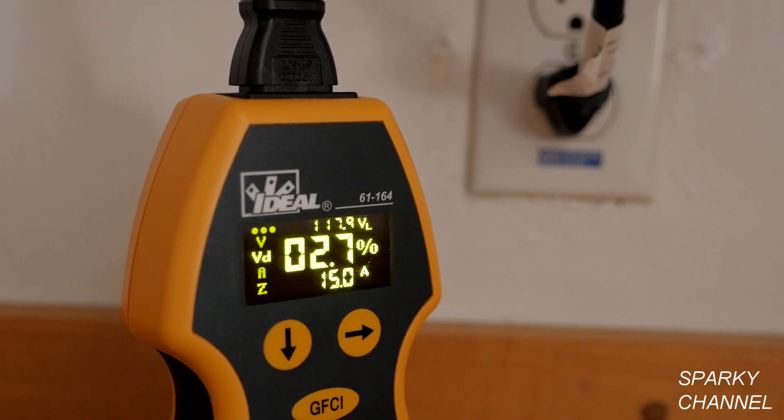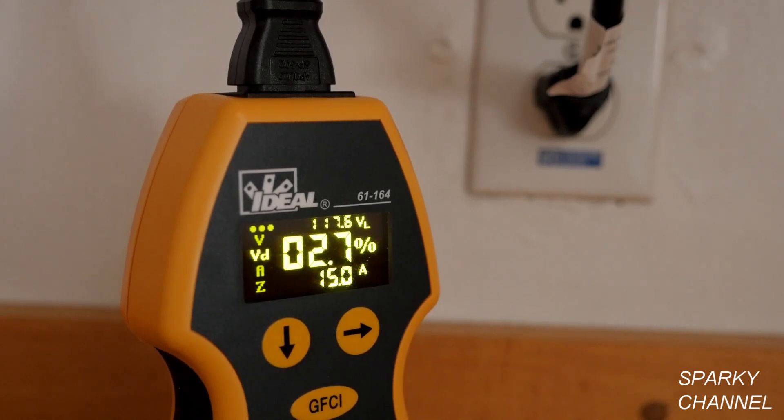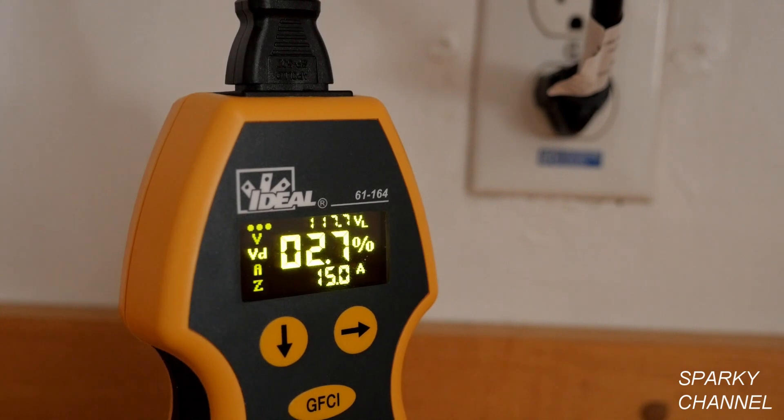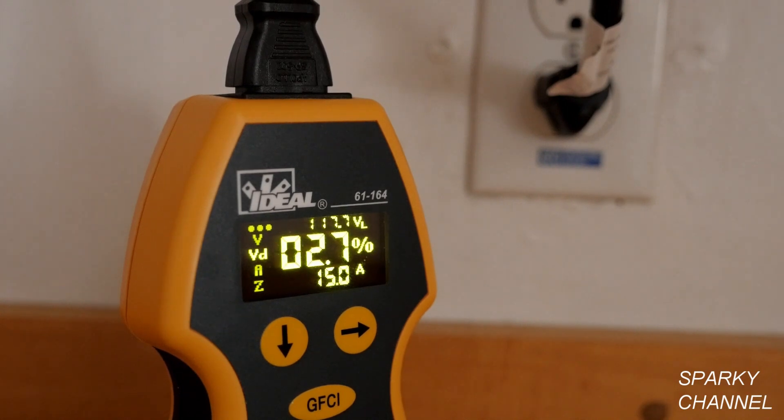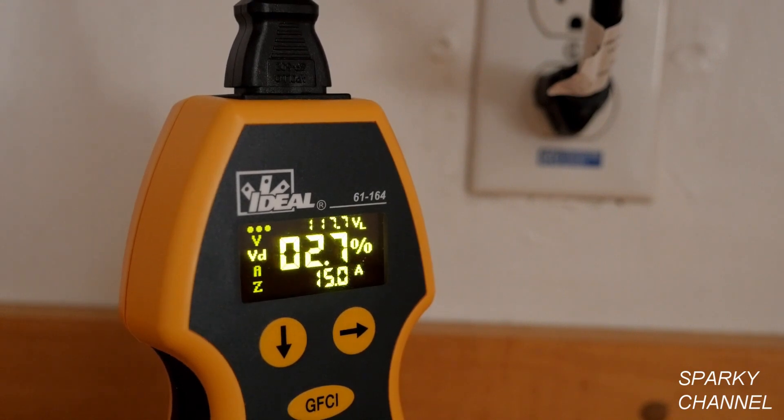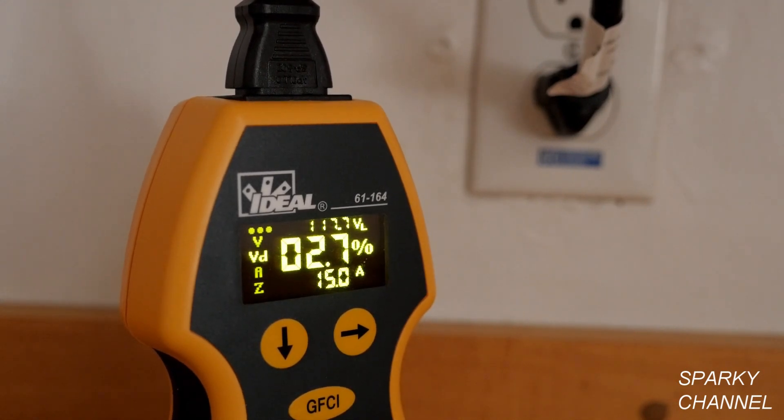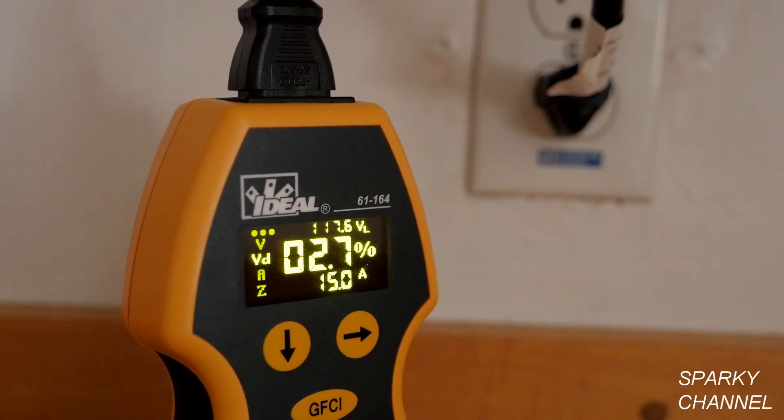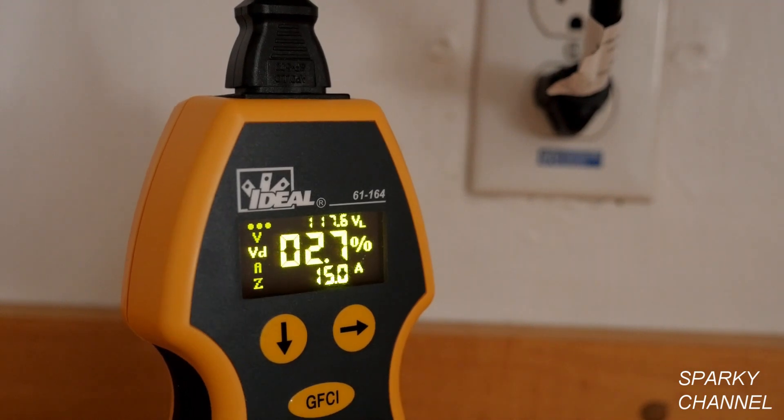For voltage drop, you should test all the receptacles on a given circuit. The last receptacle on the circuit should have the greatest voltage drop because the wiring run is the longest to that point. Some things that can cause a voltage drop would be too much load on the circuit, in which case you might want to redistribute the load. Undersized wire for the length of the run can cause a voltage drop. Another cause is high resistance connection within the circuit or at the panel.